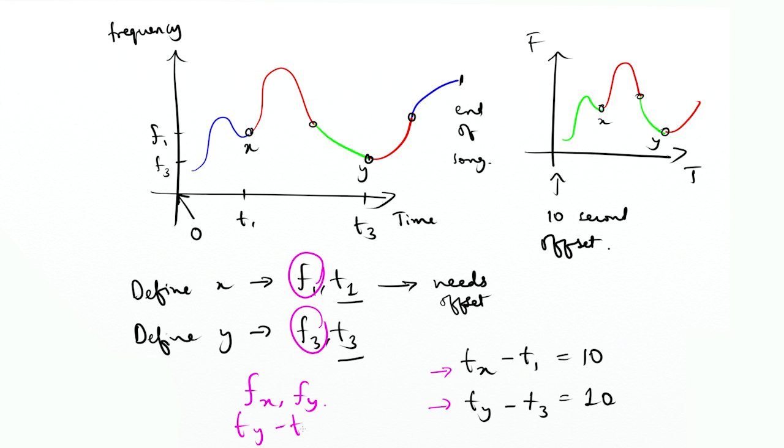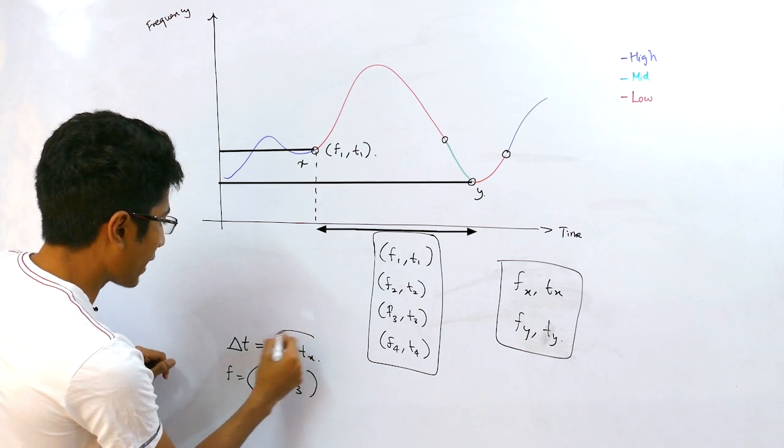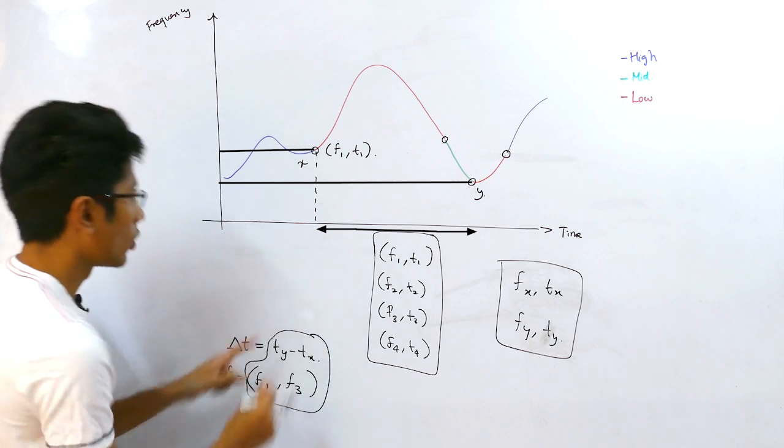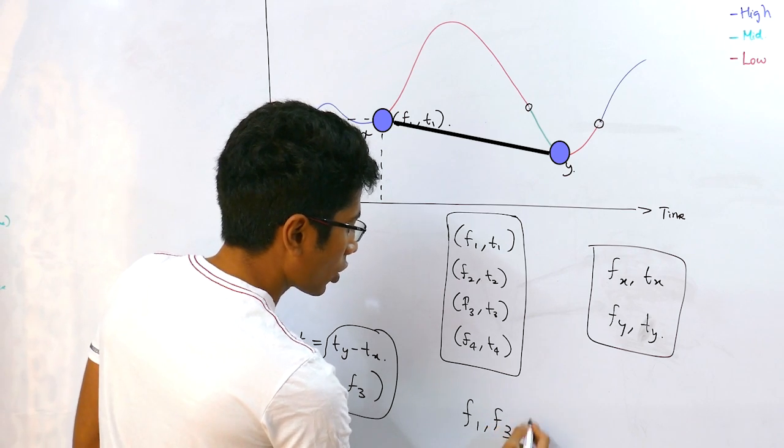So to define any two points in terms of each other, we need the frequencies of those points along with the difference in time that they have. So that is f of x, f of y and delta t for any two points x and y. So the uniquely identifying characteristics are right here for these two points and that is f1 comma f3 comma delta time.